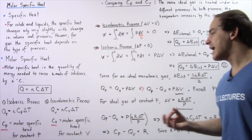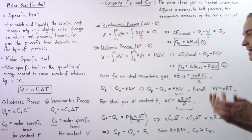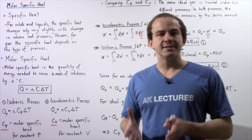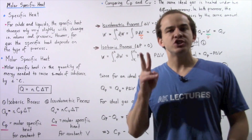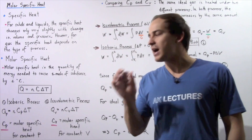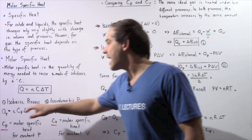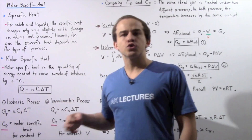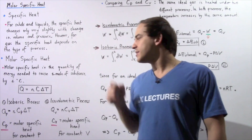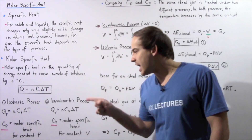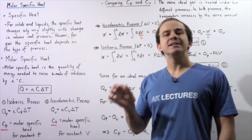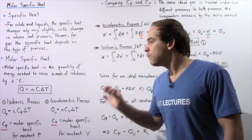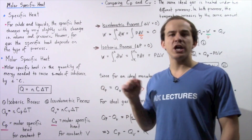Once again, if we have the same ideal gas system undergoing two different processes, we see that there is more energy transferred in the isobaric process than in an isovolumetric process for the same change in temperature.